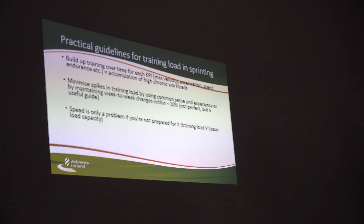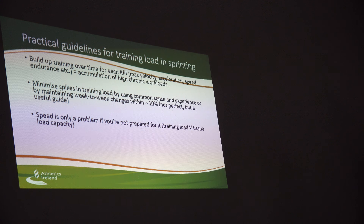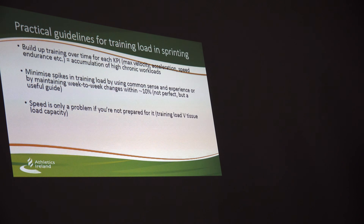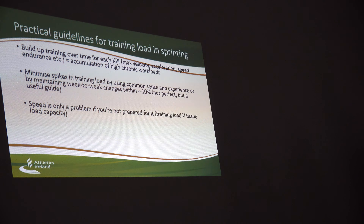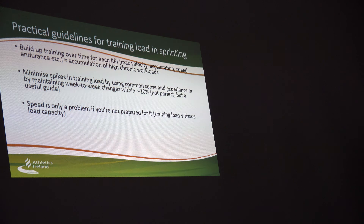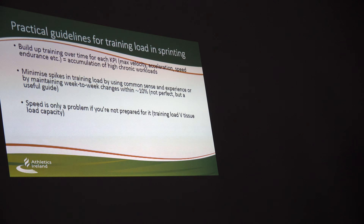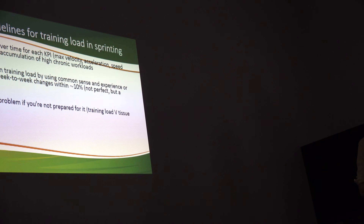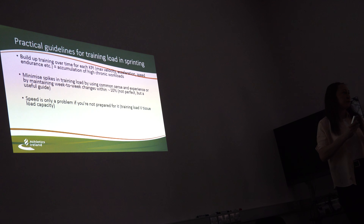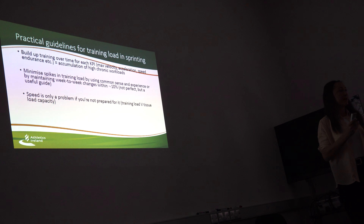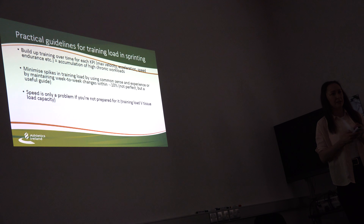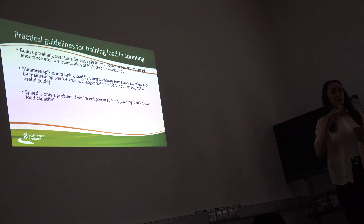If you can build up training over time for each KPI — so things like max velocity, max speed, acceleration, speed endurance — that will lead to an accumulation of high chronic workloads so the athlete will be prepared. While some are obviously intertwined — if you're good at max velocity, that's useful for speed endurance — they each have to be trained individually as well, for an athlete to tolerate high training loads in each area.